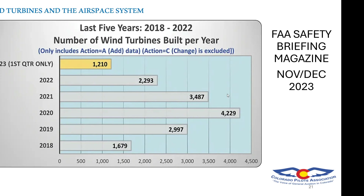From 2018 to 2022, in 2018 there were 1,679 wind turbines built. In 2019 that went up, and in 2020 it almost doubled. There's a slight decline in 2021 and 2022, which was during the COVID period, so the construction slowdown makes sense.